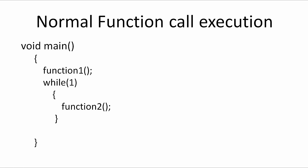In any embedded program or in any C program, this is the common format for a function call. We have the main function, and inside the main function we are calling function 1. This particular loop is the super loop or infinite loop of the program, which we will often use in an embedded program. This is where we write the logic of the program, which will be executed continuously until the microcontroller is stopped — the while(1) infinite loop. Inside this while(1) we are calling function 2.